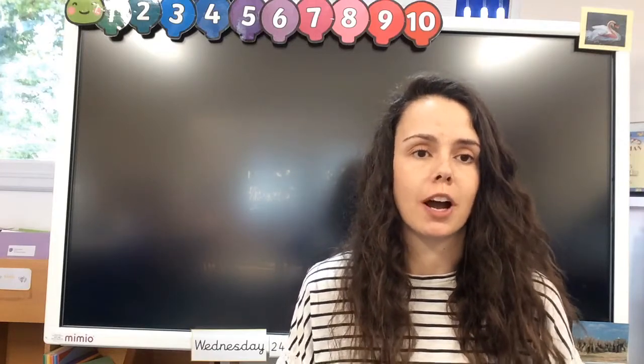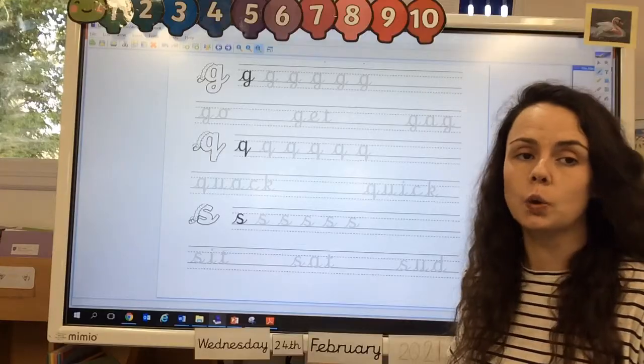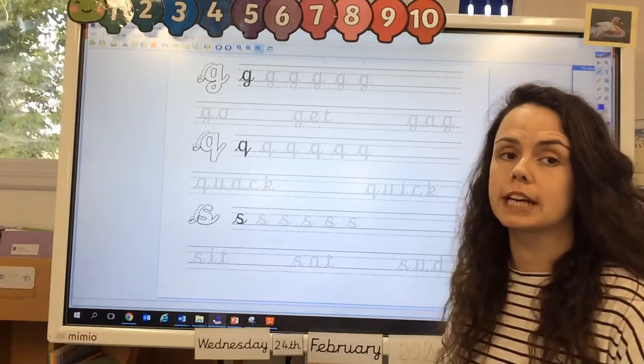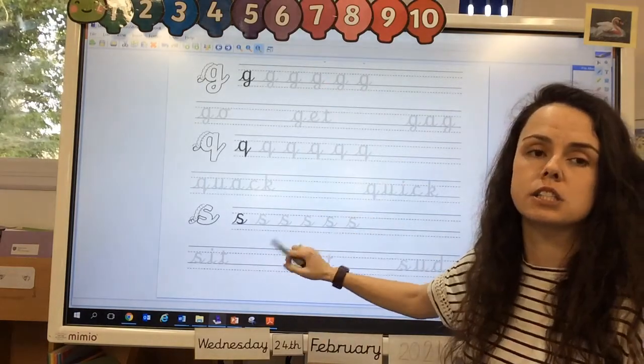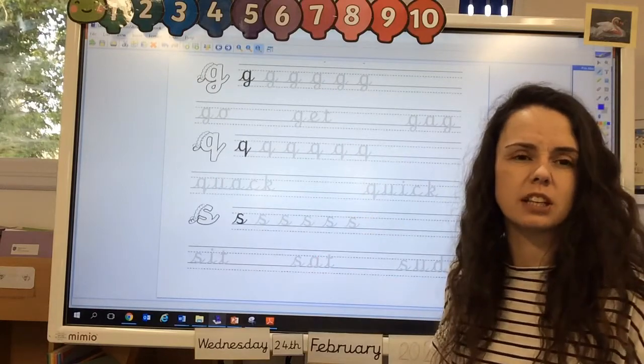Now we're going to go on to our handwriting. Okay, the three letters that we are looking at today are G, Q, and S. Okay, now can you remember our rhymes for any of these?